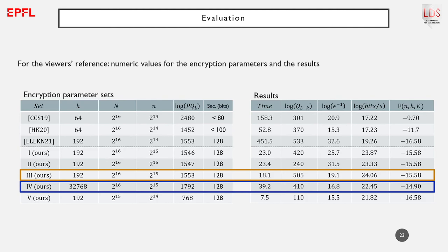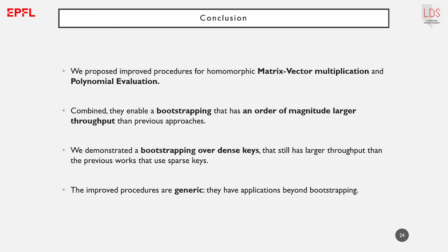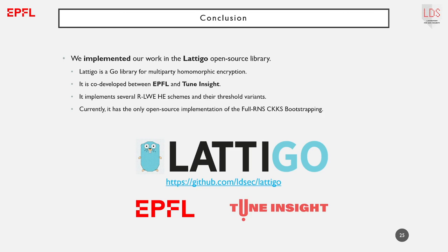To conclude, we proposed improved procedures for homomorphic matrix-vector multiplication and polynomial evaluation. Combined, they enable a bootstrapping with an order of magnitude larger throughput than previous approaches. With this improvement, we demonstrate a bootstrapping over dense keys that still has larger throughput than previous works using sparse keys. Moreover, the improved procedures are generic and have applications beyond the bootstrapping procedure. We implemented our work in the Latigo open source library.